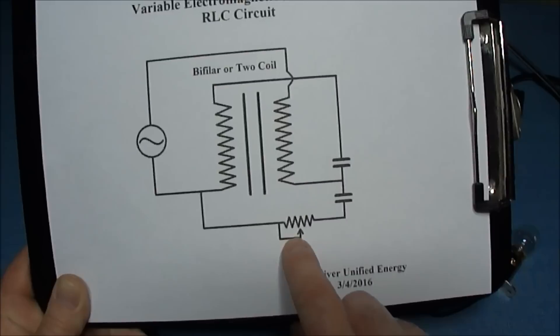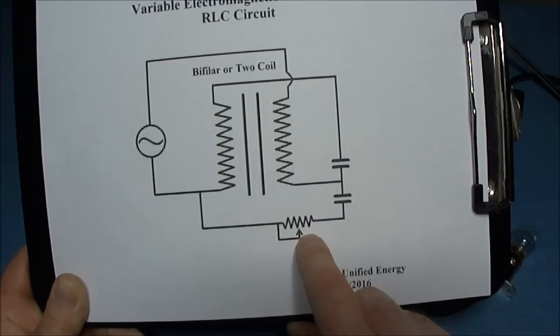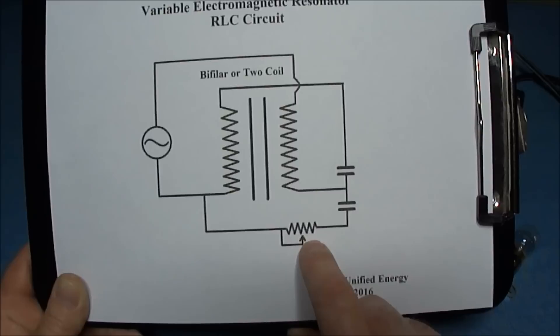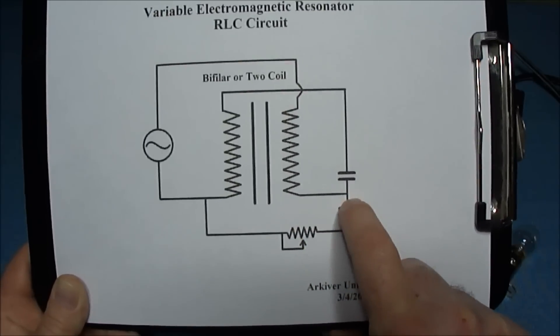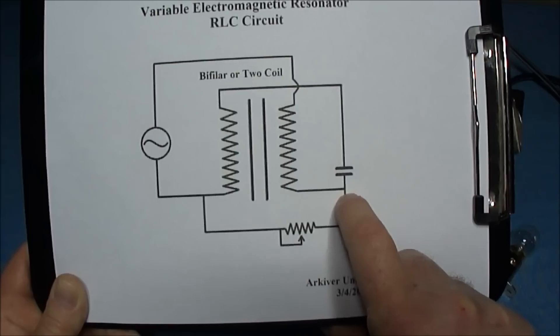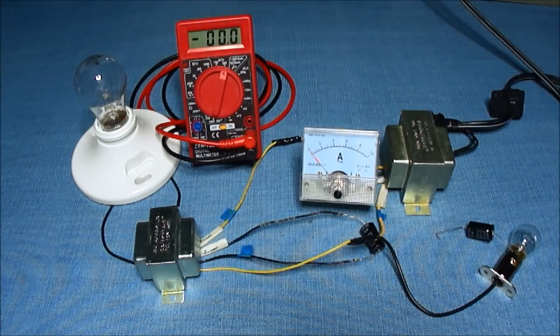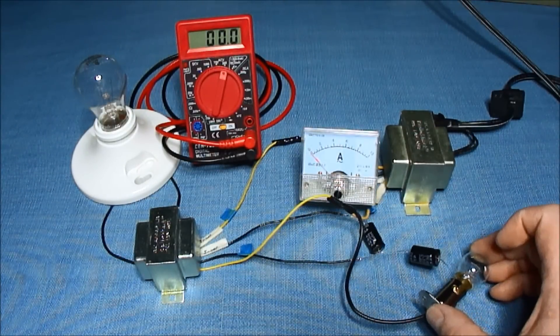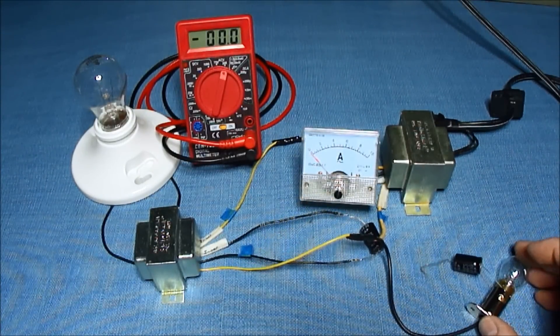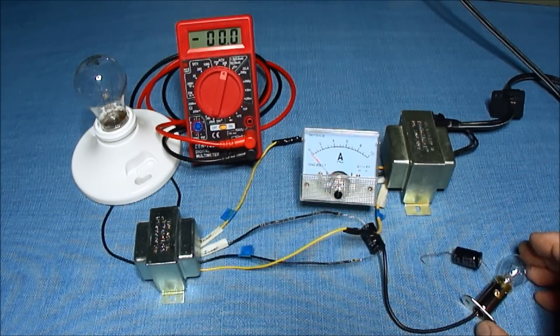I have a variable resistor here, but at the moment I'm using a light bulb. I have the circuit broken right here because I'm going to momentarily touch the other capacitor here and start the resonant oscillation and see how long it continues.